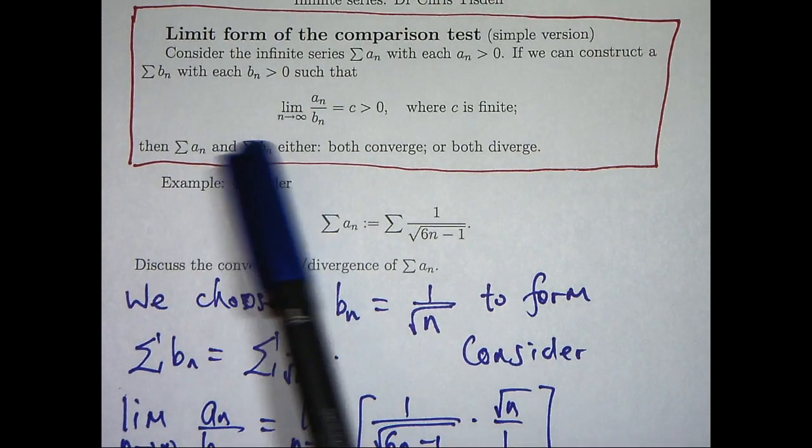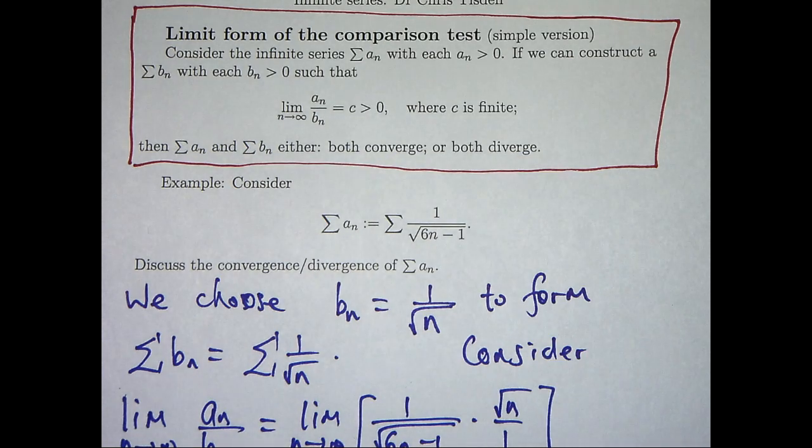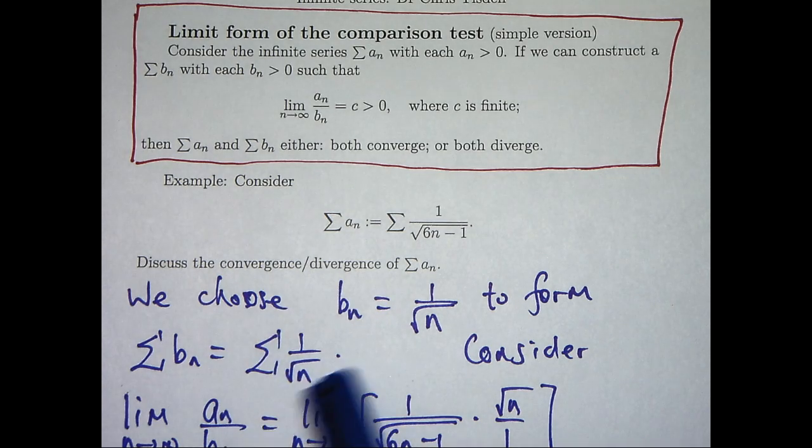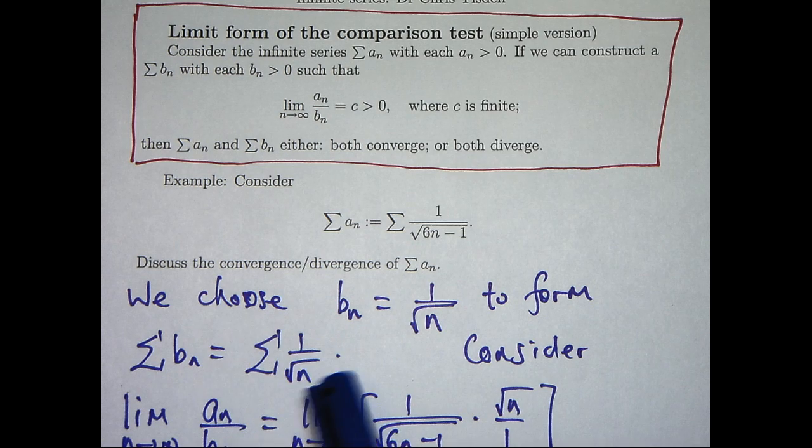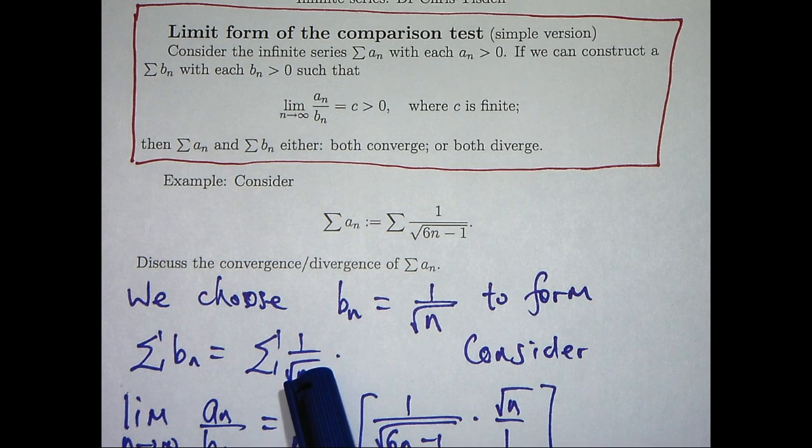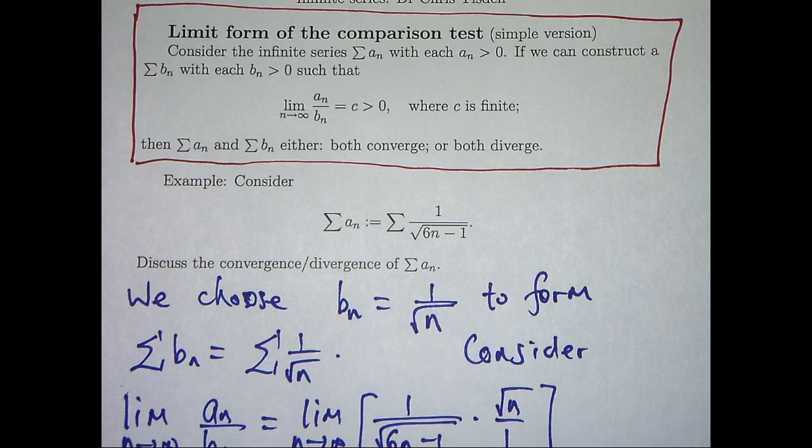So, either our two series converge or they both diverge. So let's have a look back now at our series Σbₙ. Does this converge or does this diverge? And whatever it does, the limit form of the comparison test tells us that the original series must also do the same.